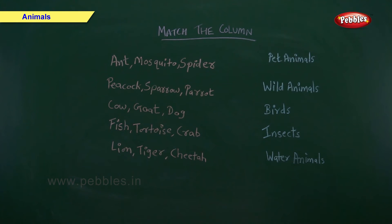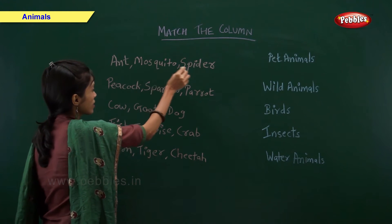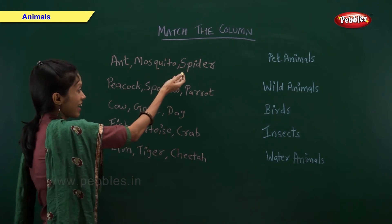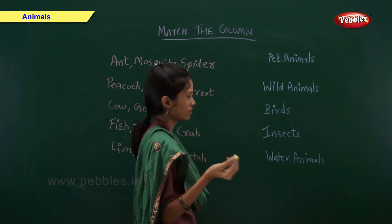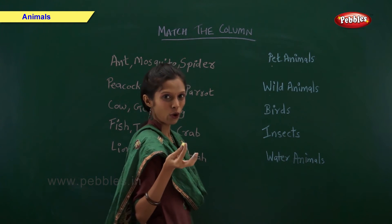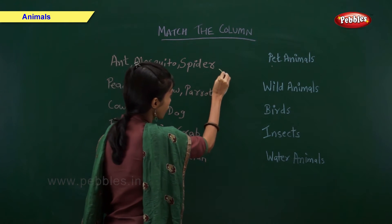Match the column. On one side I have written the examples of animals and on the other side I have written types of animals. You have to match them. Ant, mosquito and spider — are these examples of pet animals? No. Wild animals? No. Ant, mosquito and spider are examples of insects.